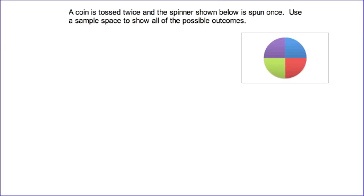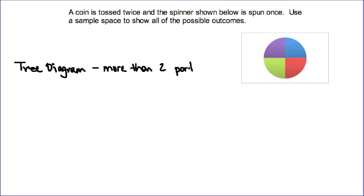The final sample space we're going to look at is a tree diagram. A tree diagram works really well when you have more than 2 parts to an event. Looking at the third example, we actually have 3 parts to this event. A coin is tossed twice — that's two parts — and a spinner is spun once. The first thing we should do is identify what all of the outcomes are for each of the individual parts.